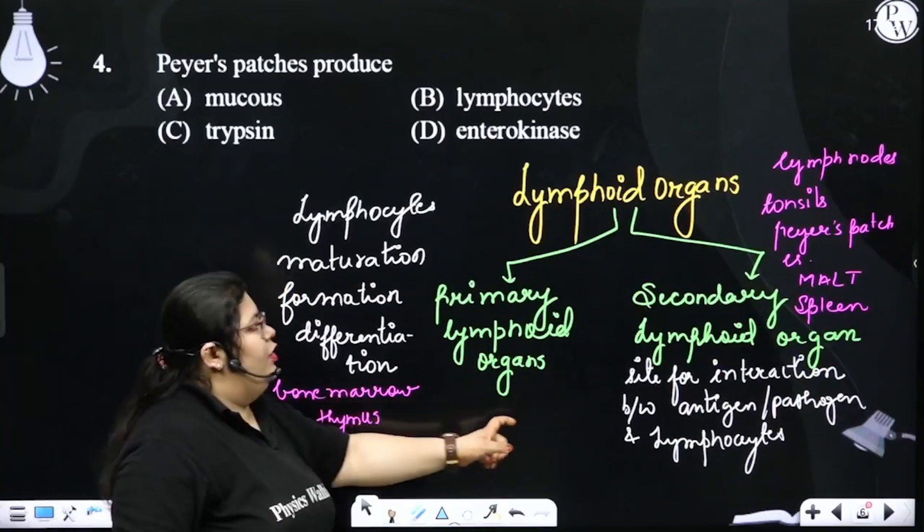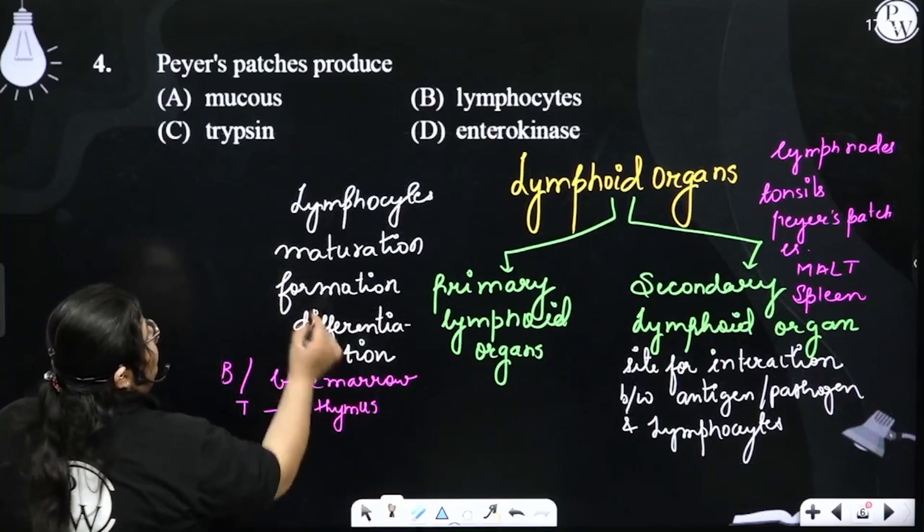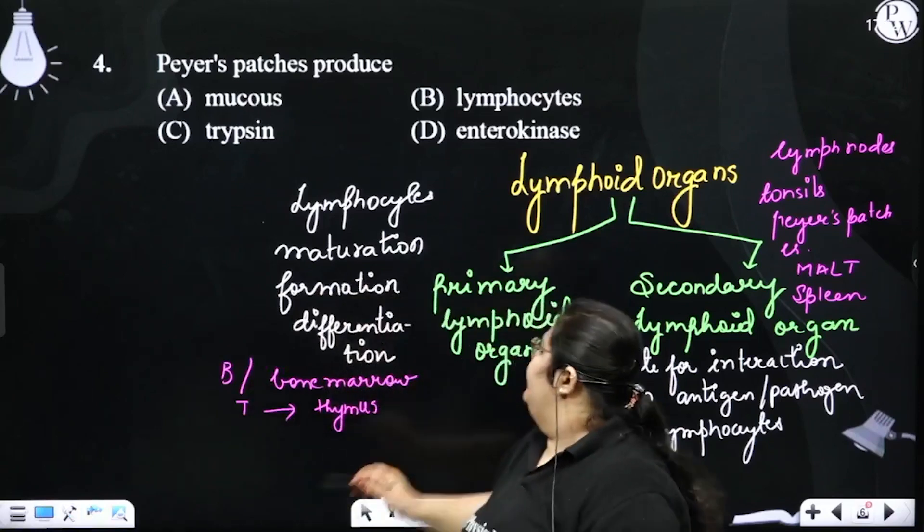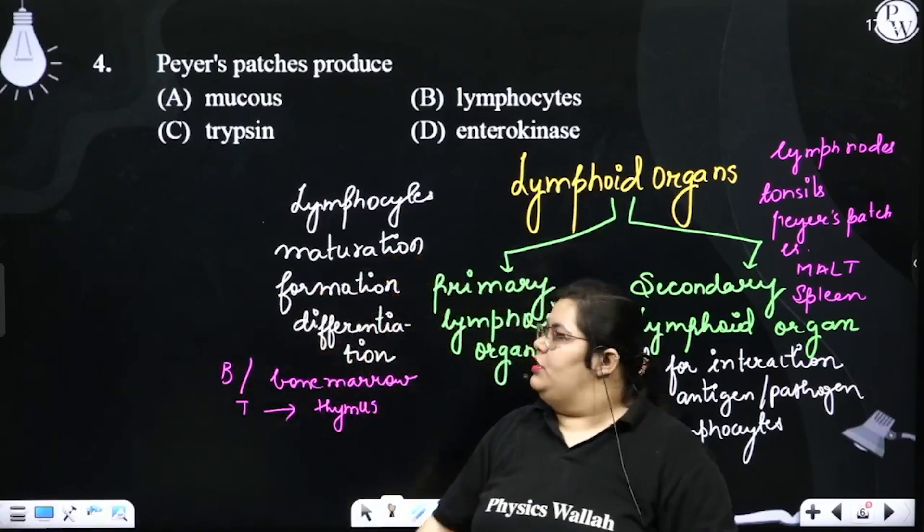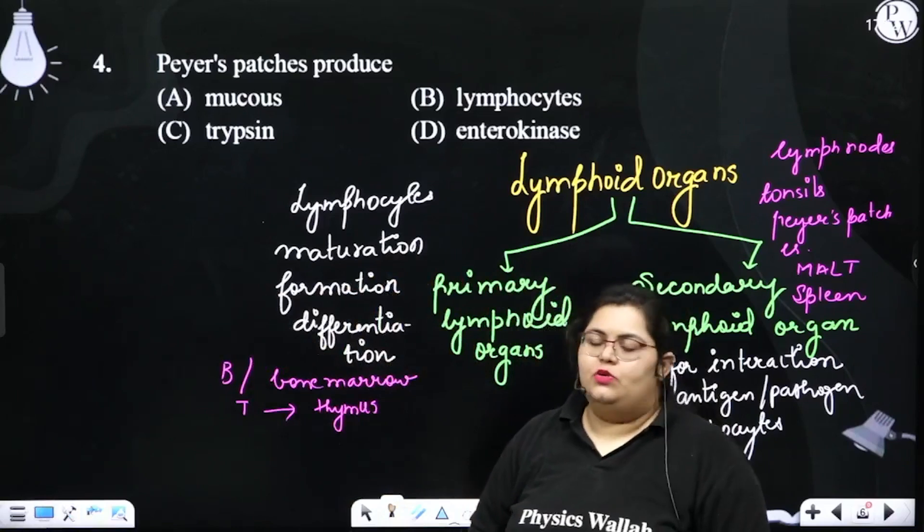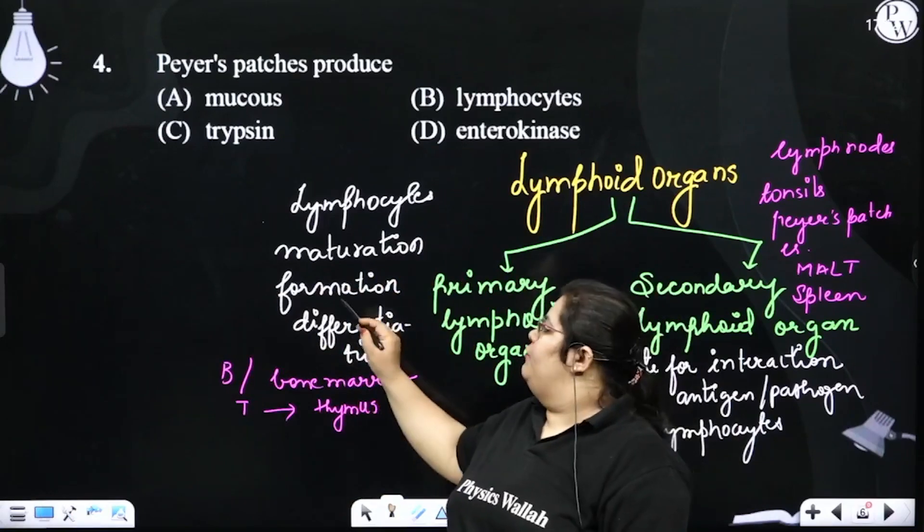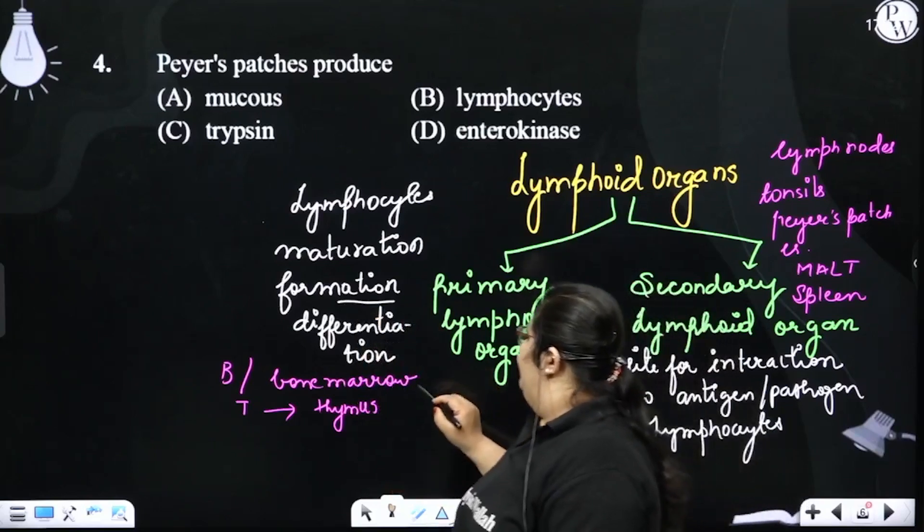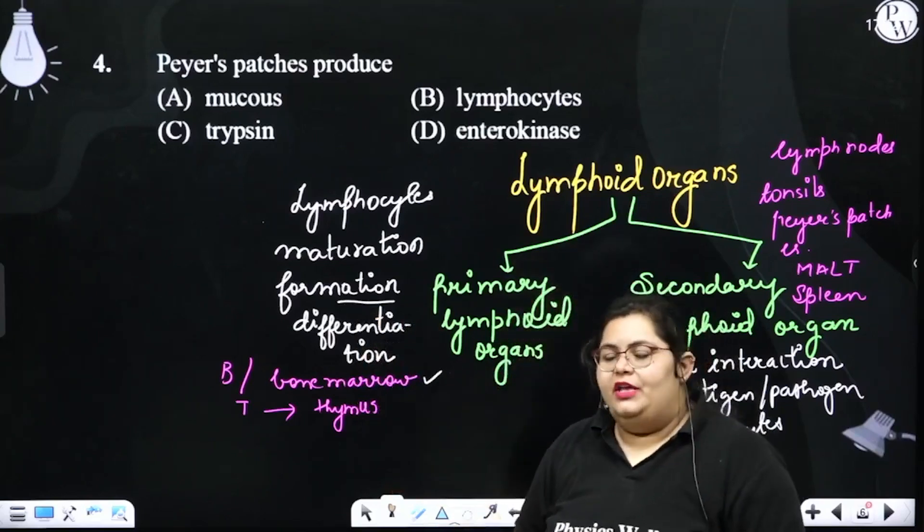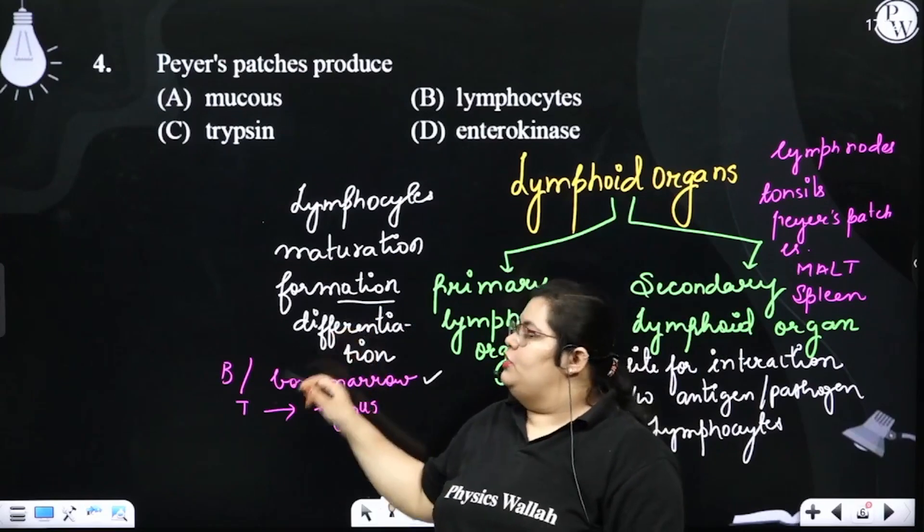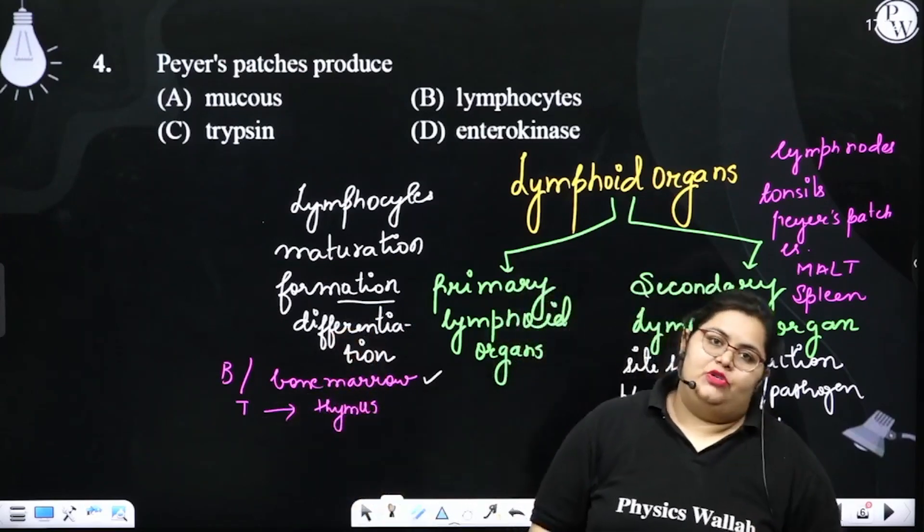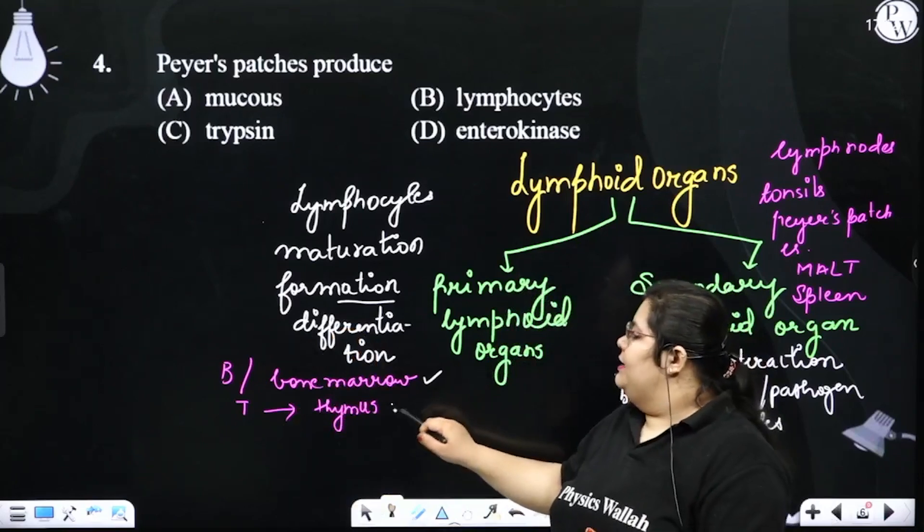What happens in the lymphoid organs? Our lymphocytes have maturation, formation, and differentiation. The lymphocytes have formation in the bone marrow. The bone marrow is one of the primary lymphoid organs. The B cells have maturation and differentiation in the bone marrow, whereas T cells have maturation and differentiation in the thymus gland.